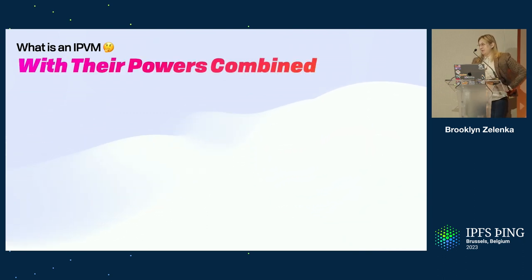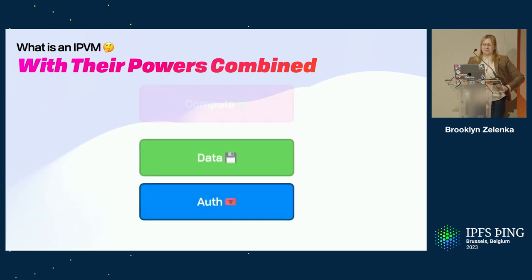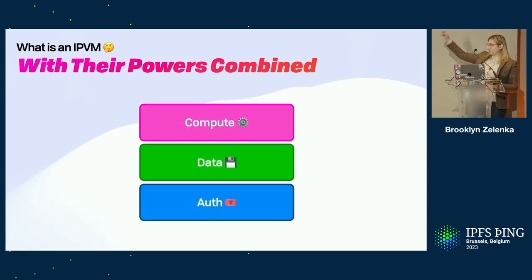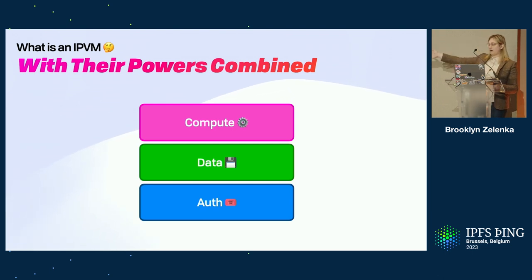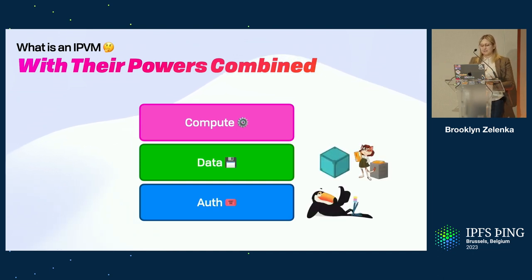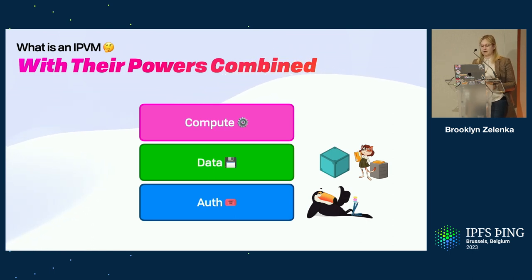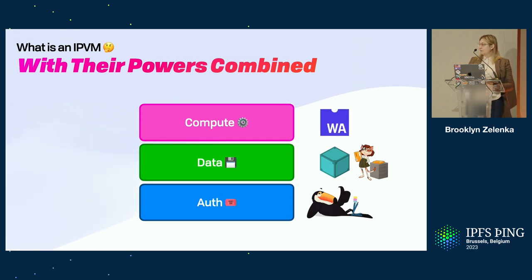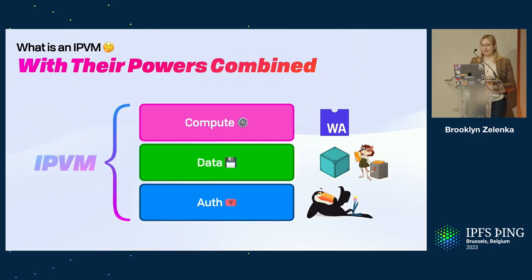We've been trying to get to compute at Fission for a while. To do compute you need data, and to do data in a production setting you need auth. So we built UCAN on top of data. For data, we're doing IPFS. And on top of that, we've built WebNative file systems so that we can do permissioned access to data as well. And WebAssembly, which runs on its own standards process and is quickly becoming a standard basically everywhere. With all of these combined, you get an IPVM, roughly.